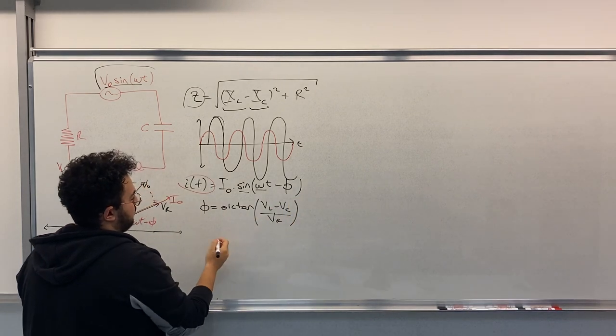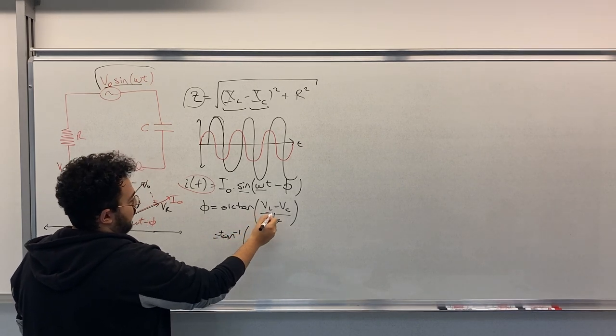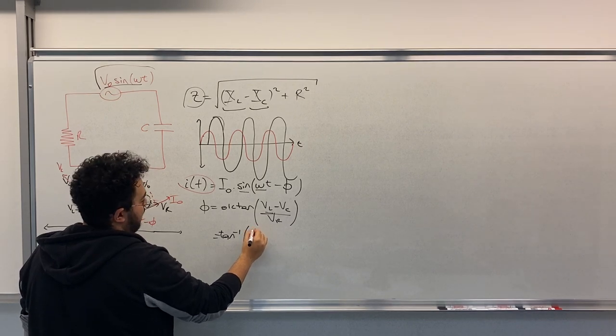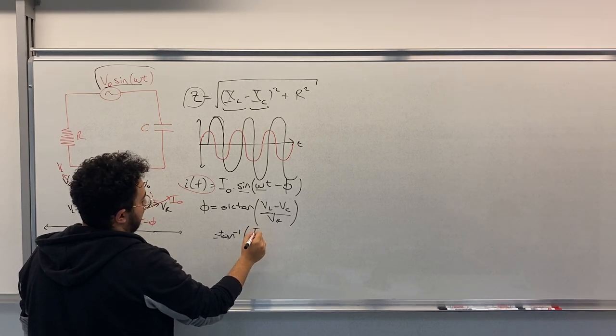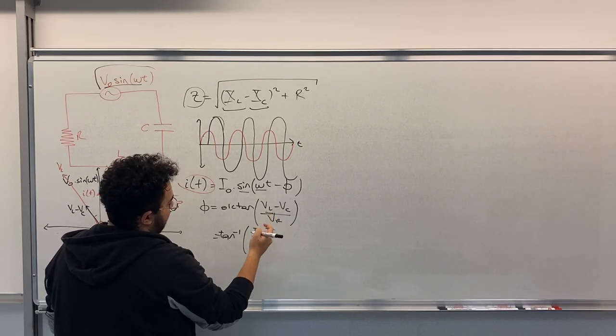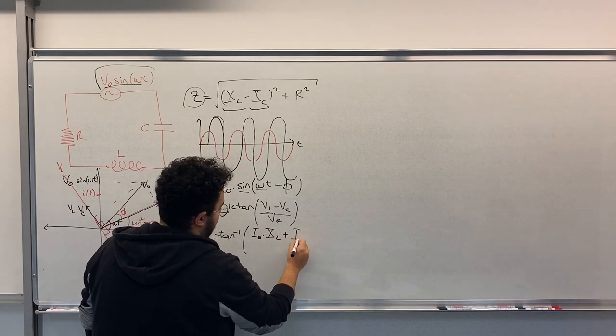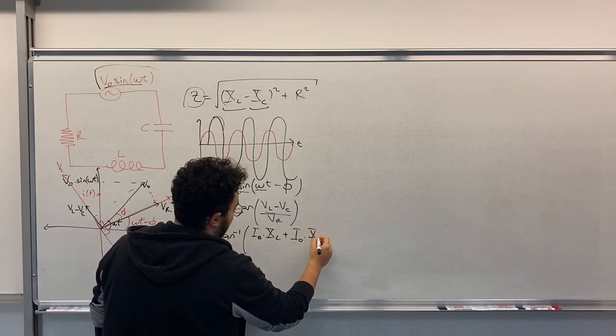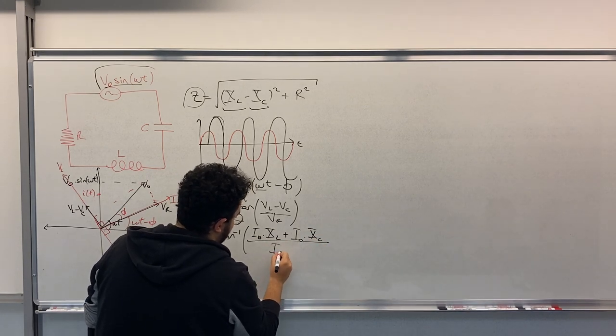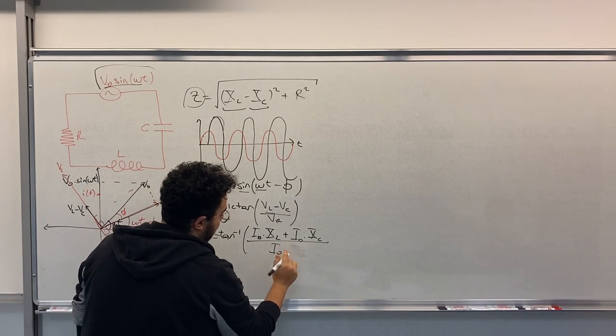Now what are those? VL is I0 times impedance of the inductance, VC is I0 times impedance of the capacitor, divided by I0 times impedance of the resistance, which is actually R.